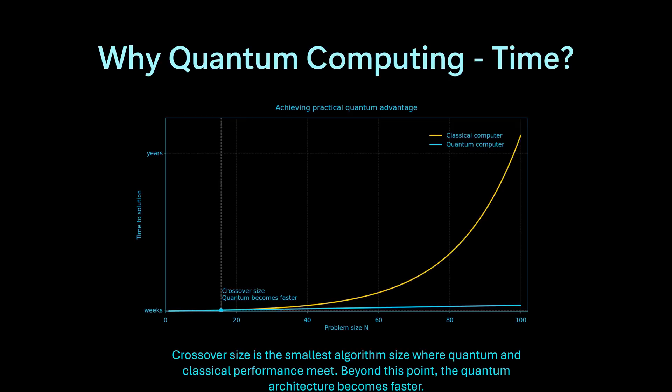Looking far to the right on the graphic, you can see as the input steps get really large, the time for classical systems become effectively infinite. For example,